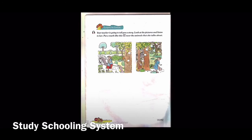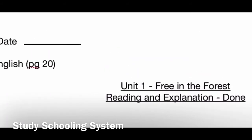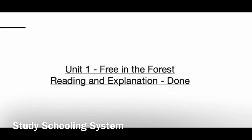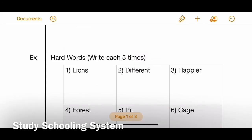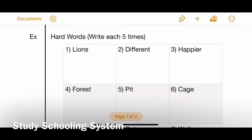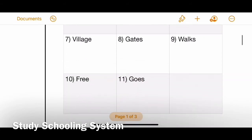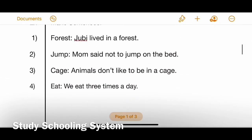All of your textbook exercises are done. Now open your notebooks. First, make a title page - write today's date and day, then below it write 'English page 20,' and in the center write 'Unit One: Free in the Forest,' and below that 'Reading and Explanation.' Turn to a new page - our first exercise is horrid words from the last lecture. Write each word five times: lions, different, happier, forest, pit, cage, village, gates, walks, free, goes.